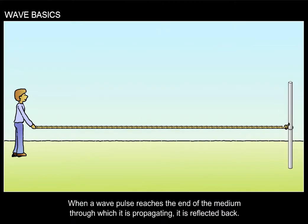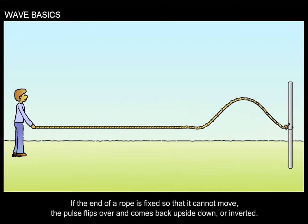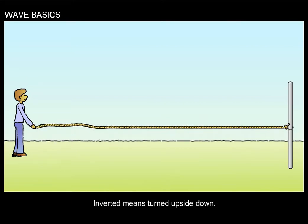When a wave pulse reaches the end of the medium through which it is propagating, it is reflected back. If the end of a rope is fixed so that it cannot move, the pulse flips over and comes back upside down or inverted. Inverted means turned upside down.